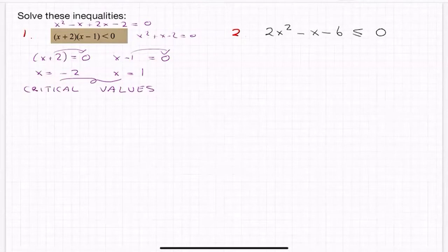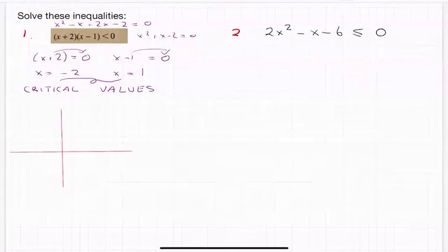So my critical values are minus 2 and 1. So now there's two ways of finishing this or solving it. And one is a graph method. If I manage to draw a relatively straight graph. And my critical values are when you solve a quadratic and you get these two values at the end, they are where it cuts through the x axis.